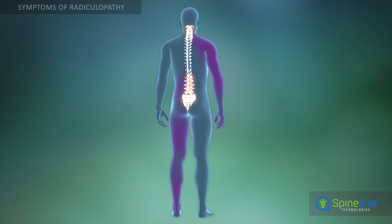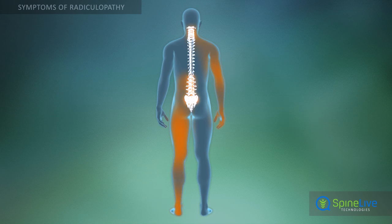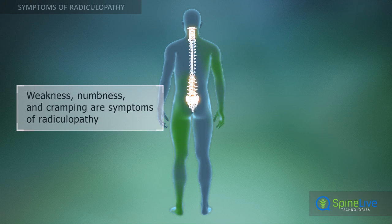Besides pain, radiculopathy can cause weakness, numbness, and cramping in the legs and arms. These conditions arise due to nerve compression, too.